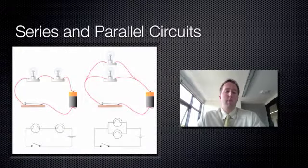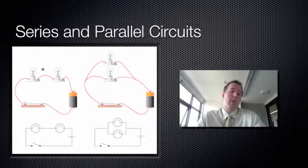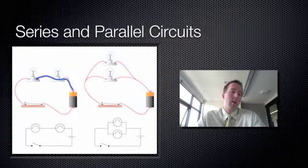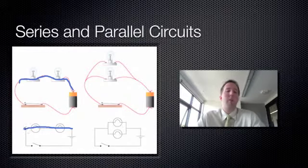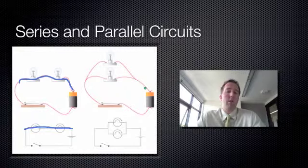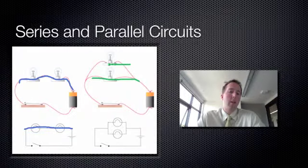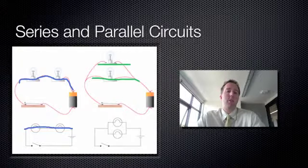In a series circuit, all of the loads — or if they're globes, all of the light globes — are connected in a series, so in a line, all together. These are all in a straight line with each other. Whereas in a parallel circuit, the light globes are connected parallel to each other, one above the other, joined up by wires.